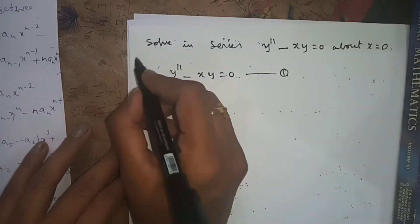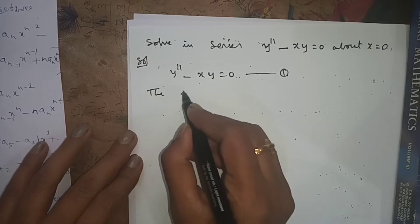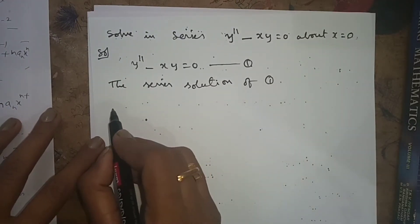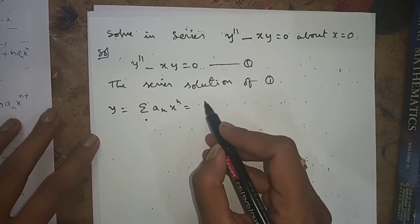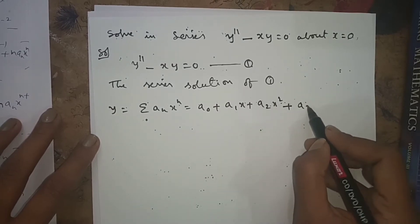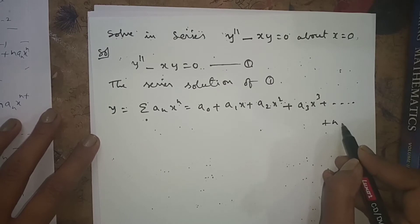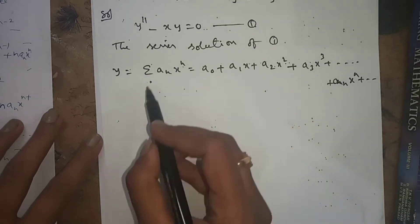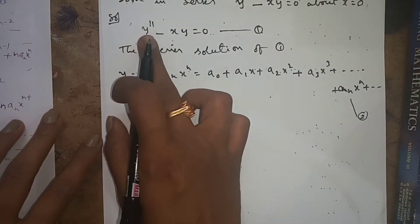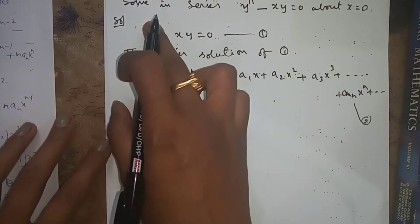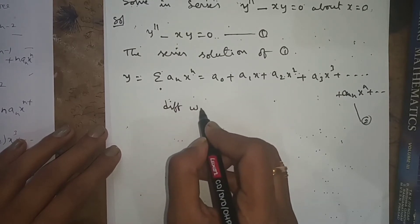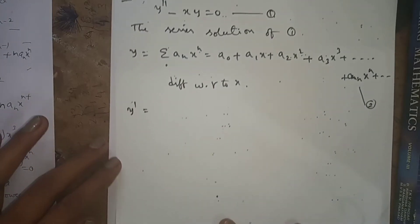The series solution formula is y equals sigma aₙ xⁿ. In particular, y equals a₀ plus a₁x plus a₂x² plus a₃x³ plus and so on, the nth term being aₙxⁿ. This is equation 2. Our given equation contains y double dash and y terms, so we need to differentiate twice to get y double dash.